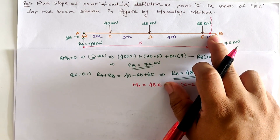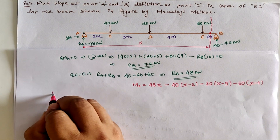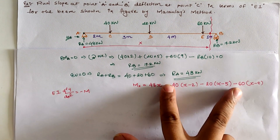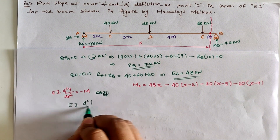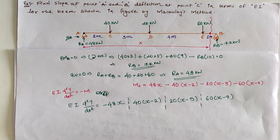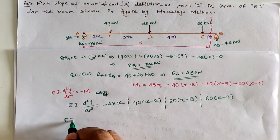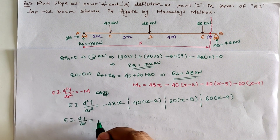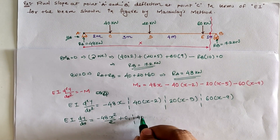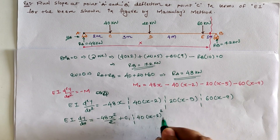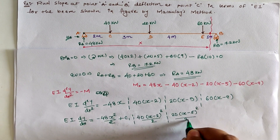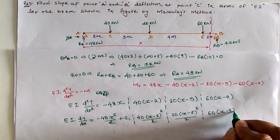This gives us the moment at the section. Now we use the elastic curve equation: EI d²y/dx² = −M. Substituting the moment expression and integrating once, we get EI dy/dx = 48x²/2 − 40(x−2)²/2 − 20(x−5)²/2 − 60(x−9)²/2 + C1, where (x−2), (x−5), and (x−9) are each treated as single terms per Macaulay's method.